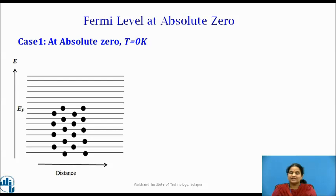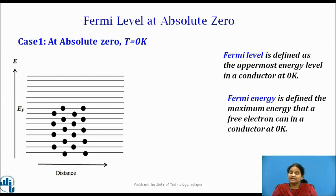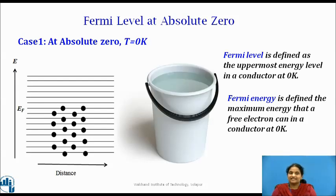This figure shows the conduction band of a conductor at zero Kelvin. At absolute zero, electrons occupy energy levels in pairs starting from the bottom of the band up to an upper level designated as E_F, leaving the upper levels vacant. So, Fermi level can therefore be defined as the uppermost filled energy level in a conductor at zero Kelvin. Correspondingly, Fermi energy can be defined as the maximum energy that a free electron can have in a conductor at zero Kelvin. The electron distribution in the conduction band can be likened to water at rest in a container, where the Fermi level corresponds to the top surface of the water.